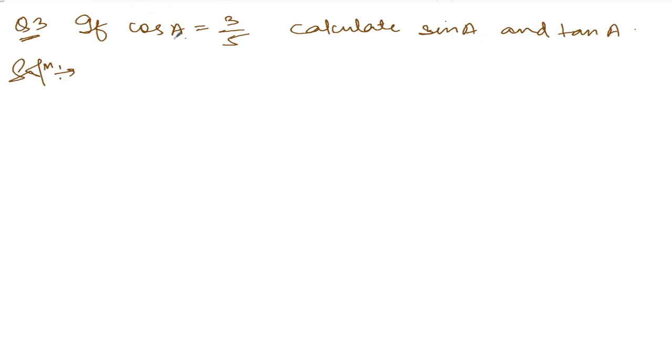Given cos a is equal to 3/5, we need to find out sin a and tan a. So what are the formulas we have? Let me write down the formulas for this question.